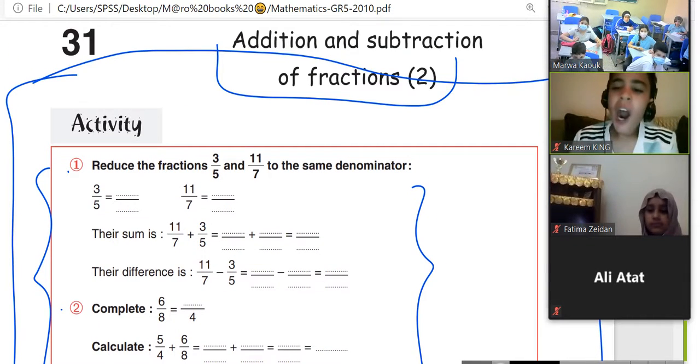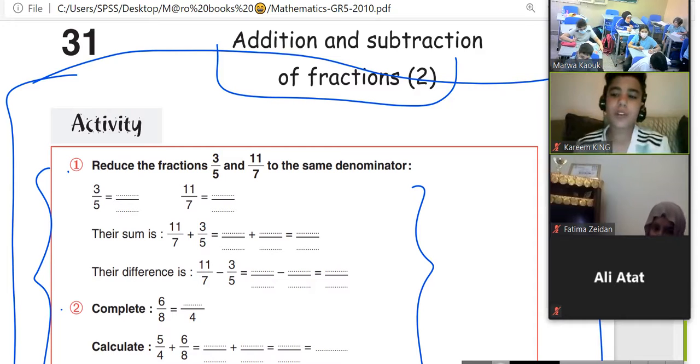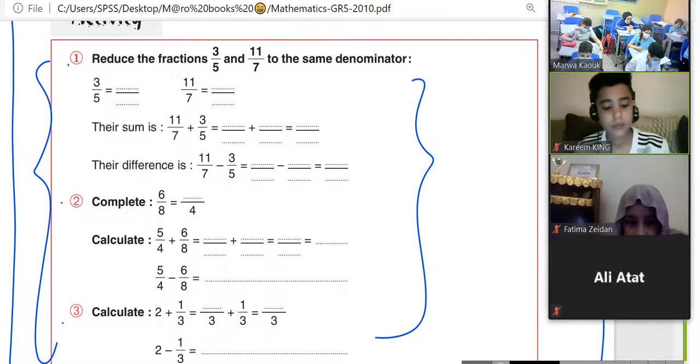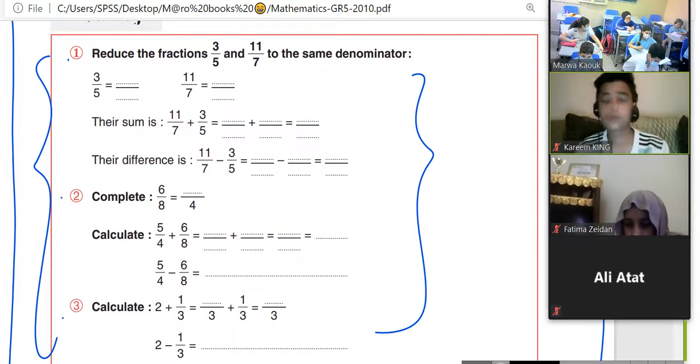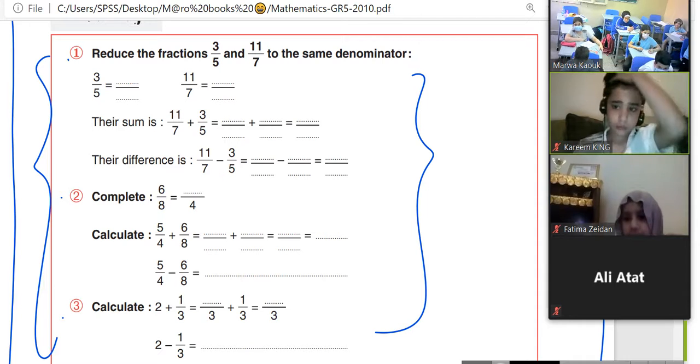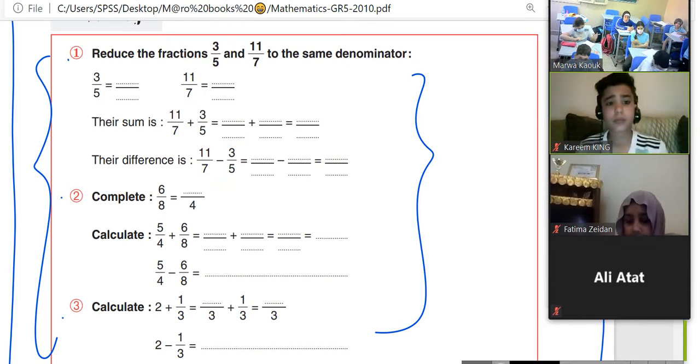You will copy it in your copybook. You will write the title in the middle and the question, and we solve it. We write the question using a blue pen and solve it by pencil. Now, reduce the fractions 3 over 5 and 11 over 7 to the same denominator.